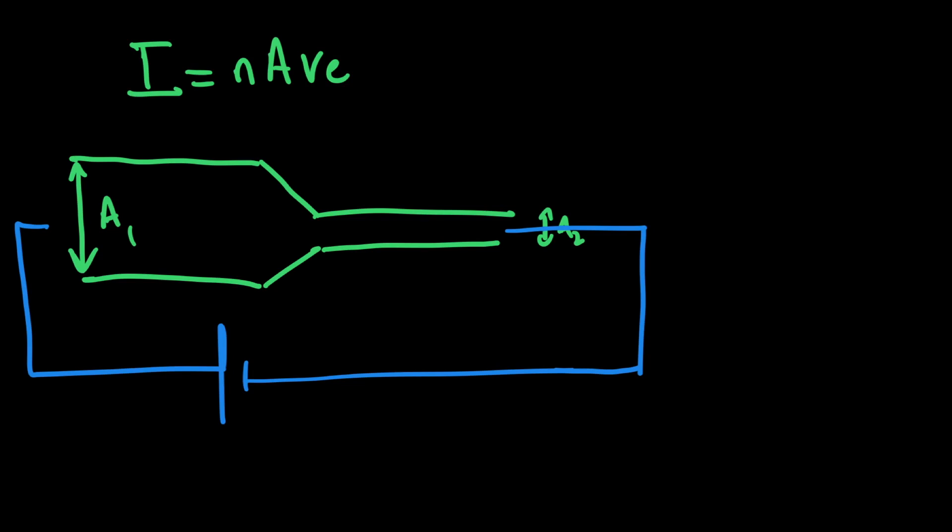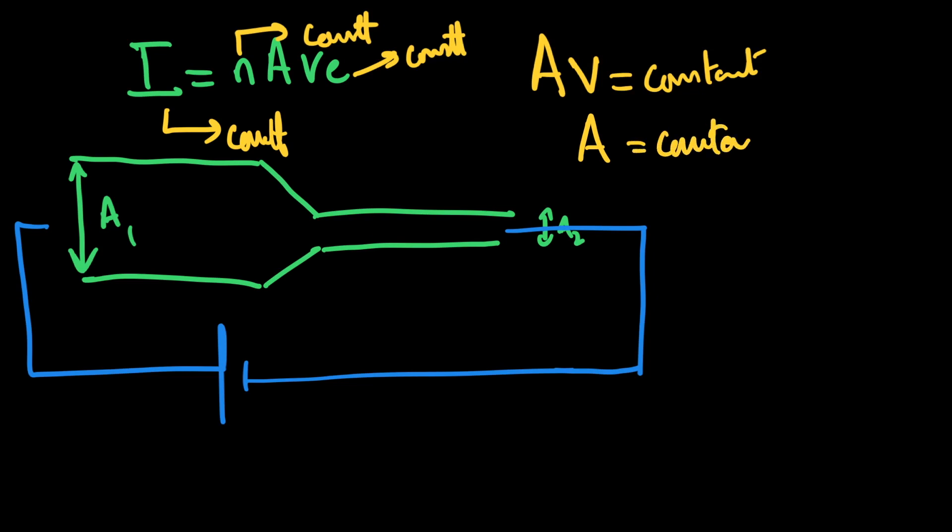The question is, would the current be the same? Of course the current would be the same because they are in a series circuit, so the current remains the same. How can the current be the same here where the wire is thick and here where wire is thin? Try to understand from the equation above. We said that the current will be constant, N number of charges that are moving is constant because it's one wire, e is also a constant. So basically area into speed equals a constant.